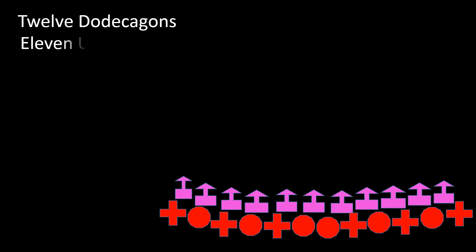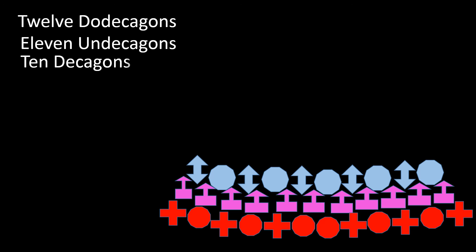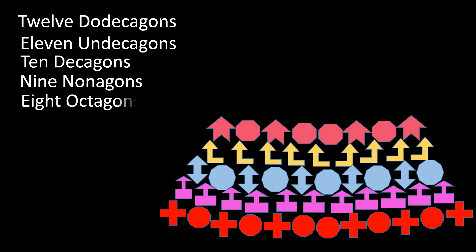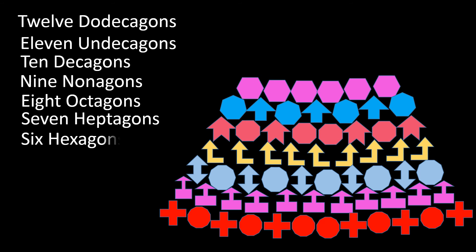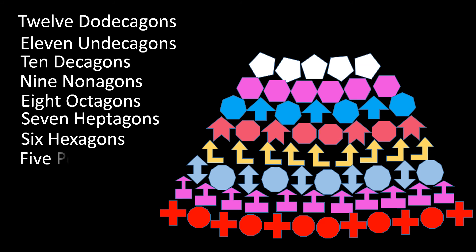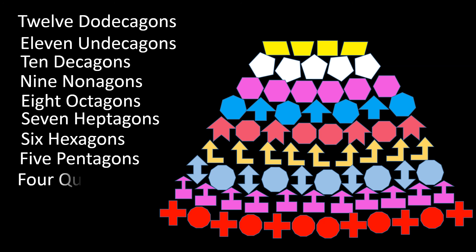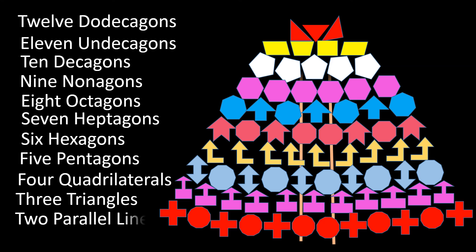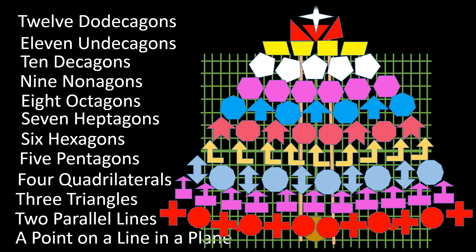On the twelfth day of geometry, my teacher gave to me twelve dodecagons, eleven hendecagons, ten decagons, nine nonagons, eight octagons, seven heptagons, six hexagons, five pentagons, four quadrilaterals, three triangles, two parallel lines, and a point on a line in a plane.